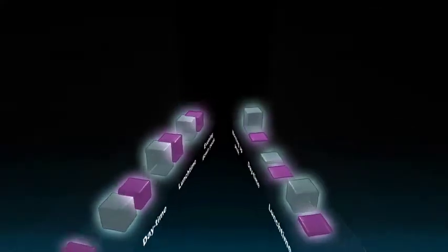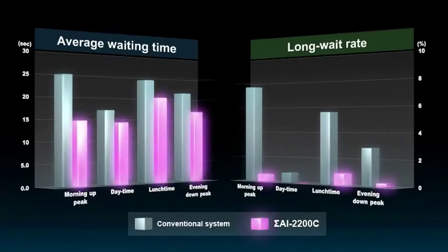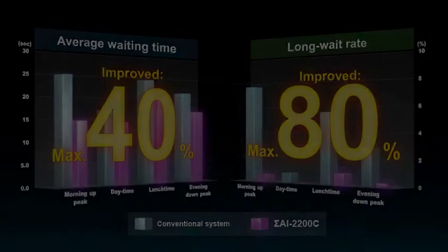Thanks to the highly efficient Sigma AI2200C group control, the waiting time is 40% and the long wait rate is 80% less than those of a conventional system.